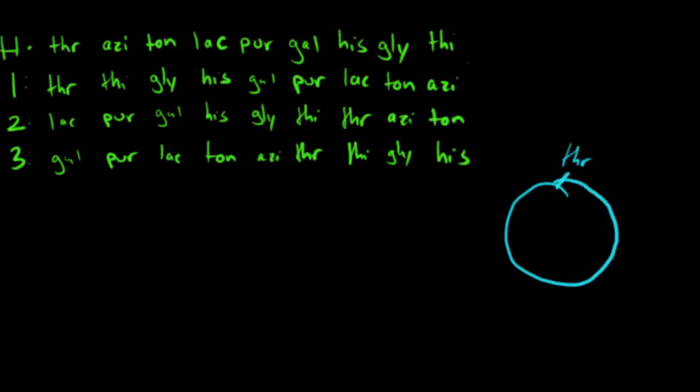So you start with the HFR strain that came through: THR, ASI, TAN, LAC, PUR, GAL, HIS, GLY, THI.